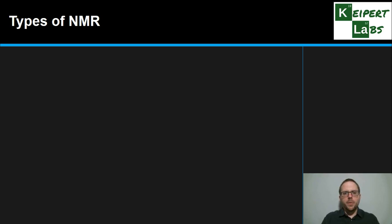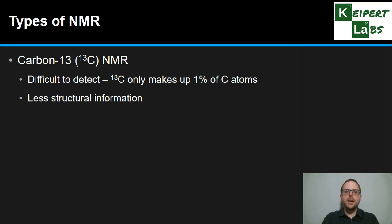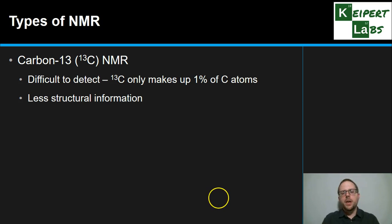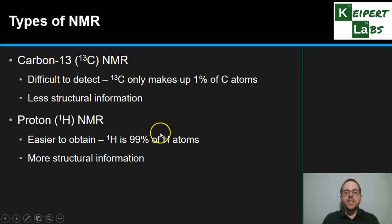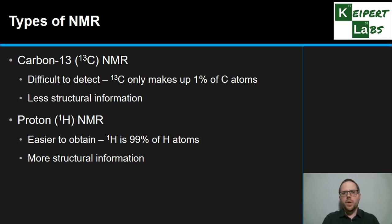The two main types of NMR we use are carbon-13 NMR and proton NMR. Carbon-13 NMR gives useful information about the carbon atoms in a structure, but carbon-13 only makes up around 1% of all carbon atoms, so you get less structural information because it is difficult to detect. Proton NMR, looking at hydrogen atoms, is much easier to obtain — that's the 99% proportion of hydrogen atoms — and you get much more structural information. Both types have their uses and together add pieces to the puzzle of how a molecule is put together.